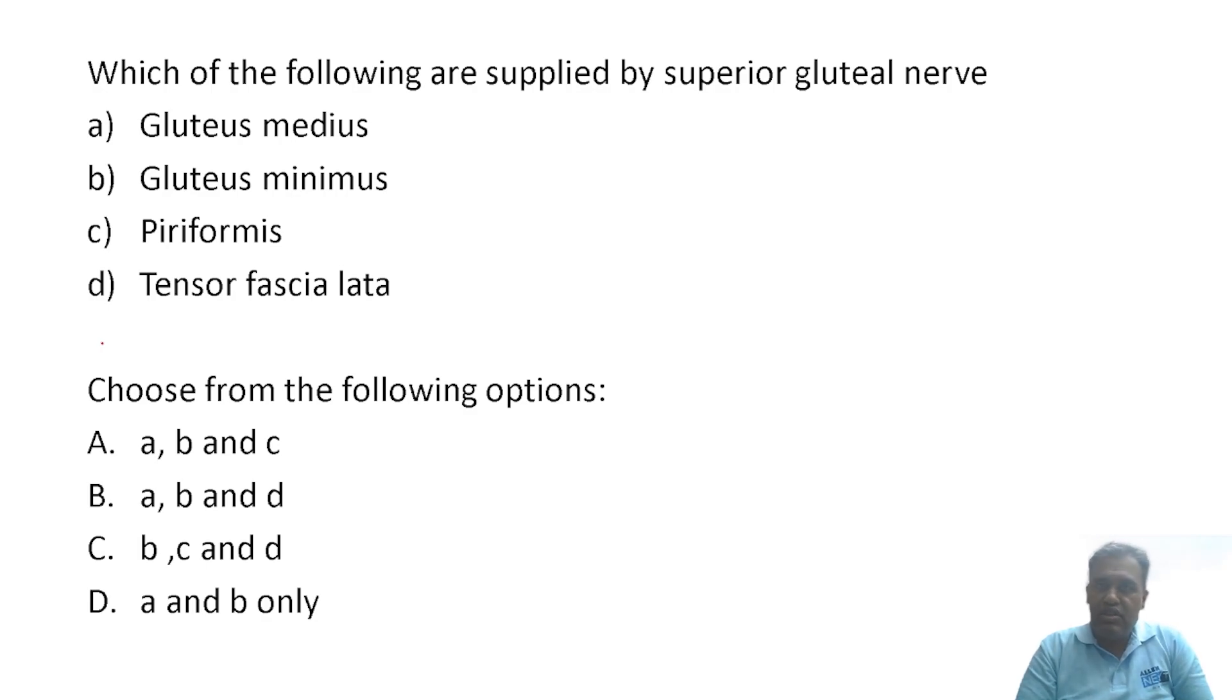Again famous question, repeated topic. Which of the following are supplied by the superior gluteal nerve? The superior gluteal nerve with root value L4, L5, S1 is a branch from the sacral plexus and is very important for the Trendelenburg sign and gait. The muscles supplied are gluteus medius and minimus, but apart from these two they also supply tensor fasciae latae.